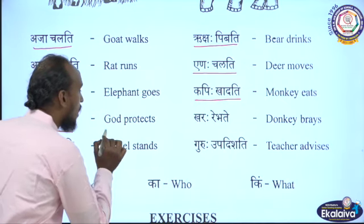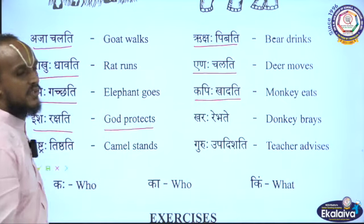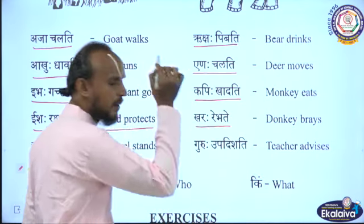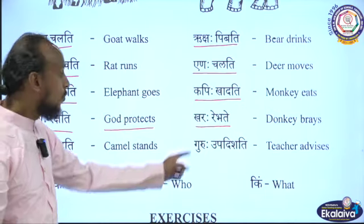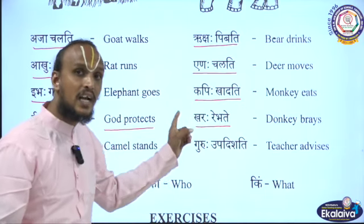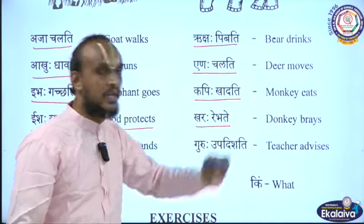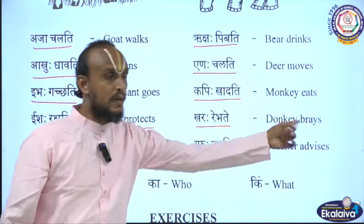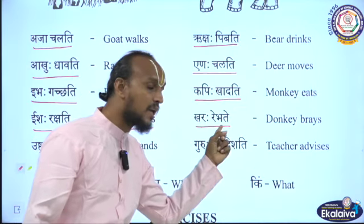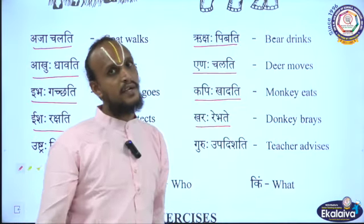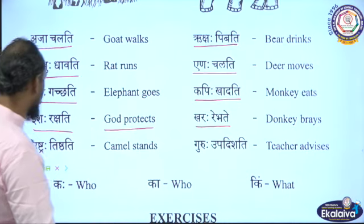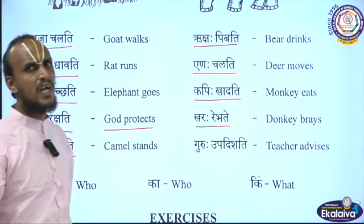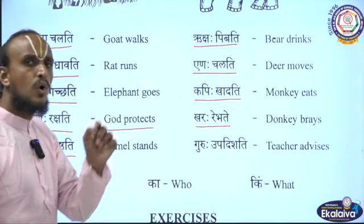The next sentence: Kharaha Rebhate. What does Kharaha mean? Kharaha means donkey. Rebhate means brays. So Kharaha Rebhate means 'Donkey brays.'